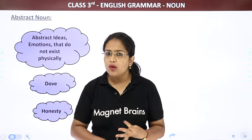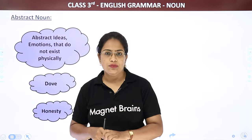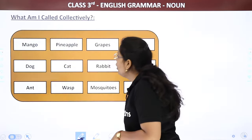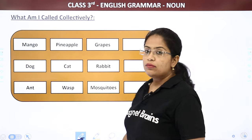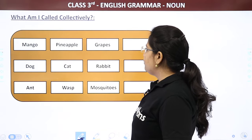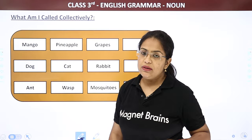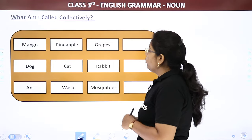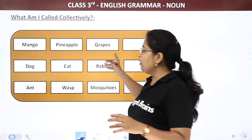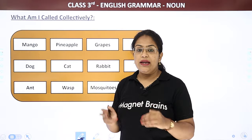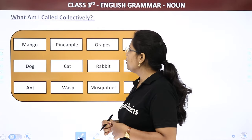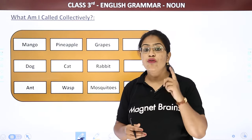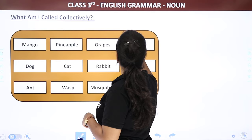So — what are the four types? Proper noun, common noun, collective noun, and abstract noun. There are more types, but these are in your syllabus. Now we start with exercises. What am I called collectively? These are examples of collective nouns. A group can be people, animals, or things. First: mango, pineapple, and grapes — collectively, what are they called? They are examples of fruits. So the first one is fruits.